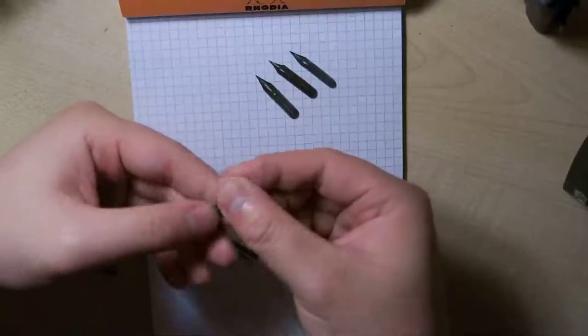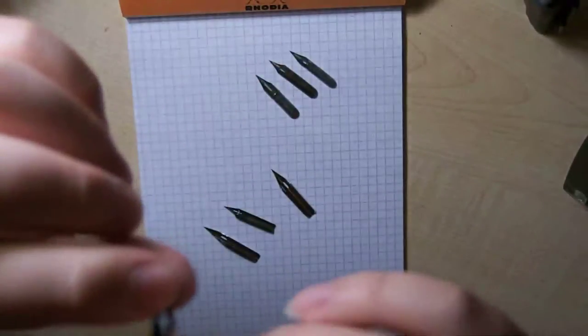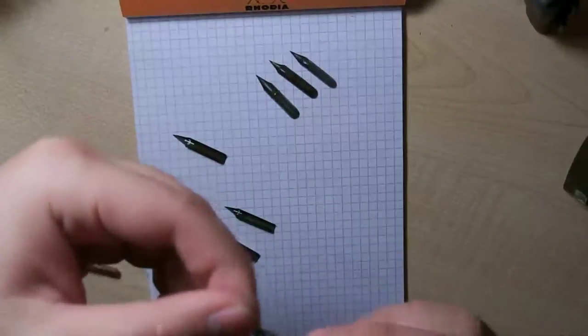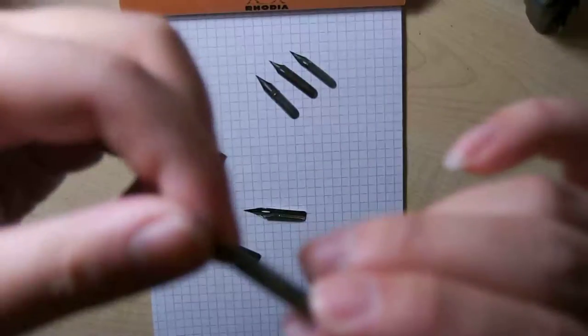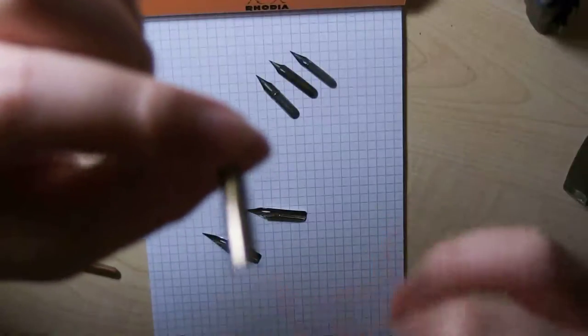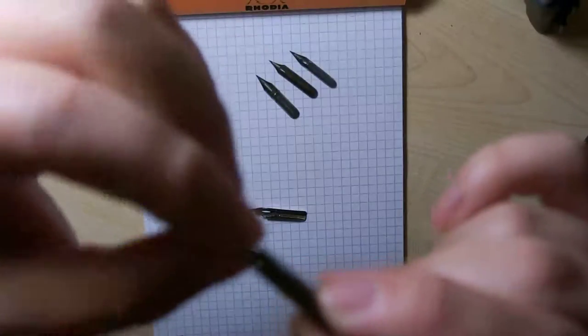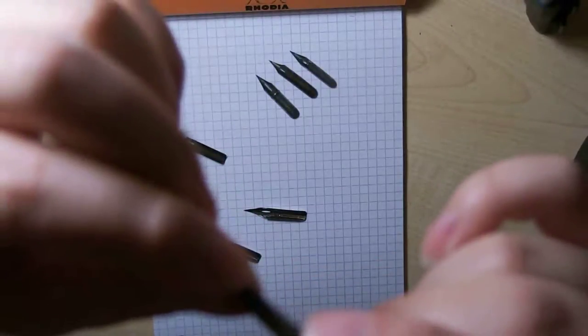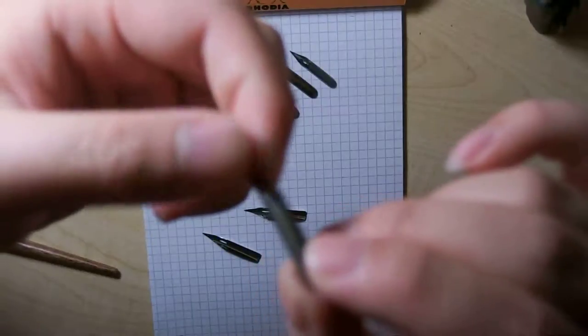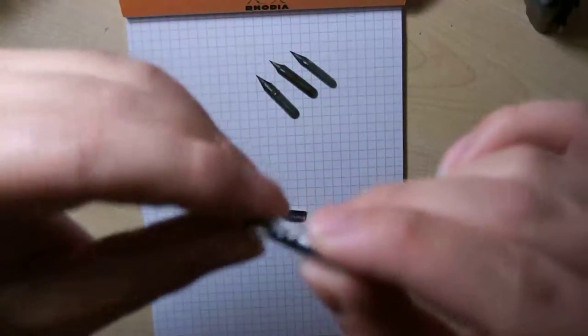Now these are new production nibs. Let's start with this one, this is the Hunt Imperial, a very nice trident-like hole. This is the Principality EF. The vintage version of this one is considered a legend, considered one of the hardest to find and the best to use. I never tried the vintage so I can't really compare, but I hope the new reproduction is just as good.